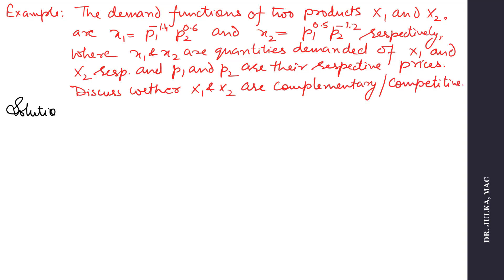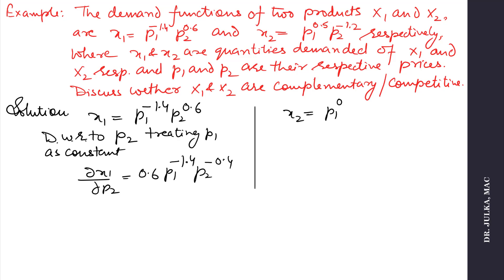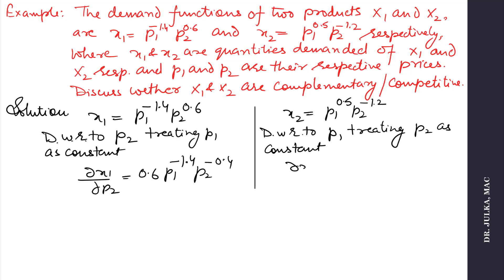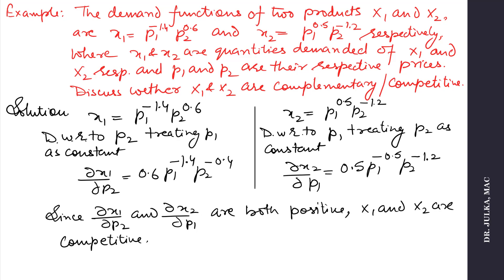For this we calculate ∂X1/∂P2 and ∂X2/∂P1. The first demand function is X1 = P1^(−1.4) · P2^(0.6). Differentiating with respect to P2, treating P1 as constant, we get ∂X1/∂P2 = 0.6 · P1^(−1.4) · P2^(−0.4). The second demand function is X2 = P1^(0.5) · P2^(−1.2). Differentiating with respect to P1, treating P2 as constant, we get ∂X2/∂P1 = 0.5 · P1^(−0.5) · P2^(−1.2). Since ∂X1/∂P2 and ∂X2/∂P1 are both positive, X1 and X2 are competitive.